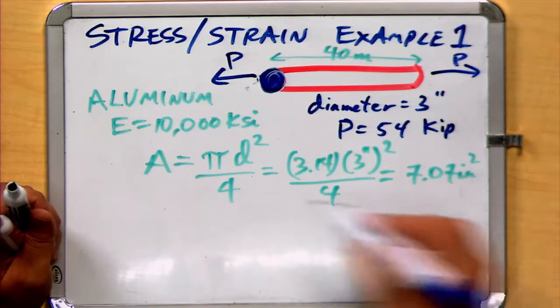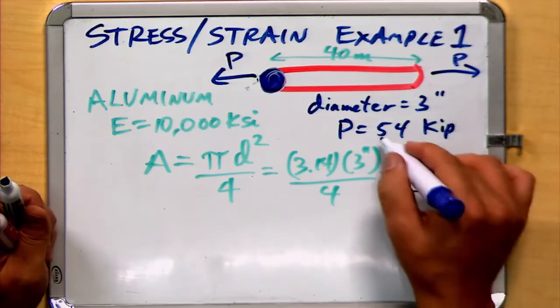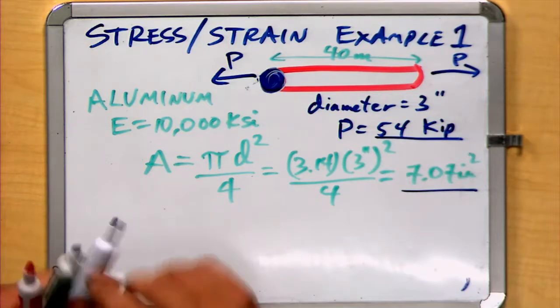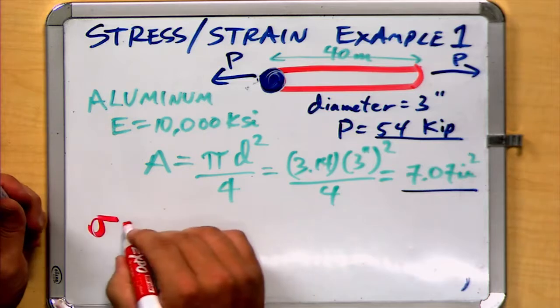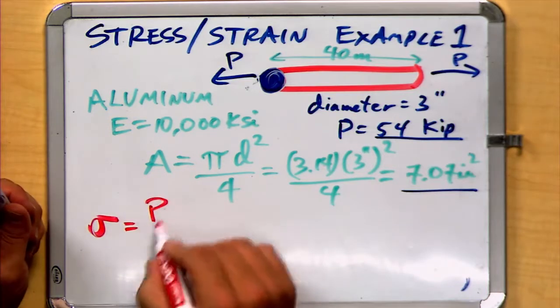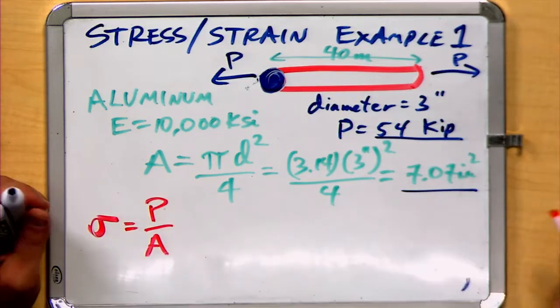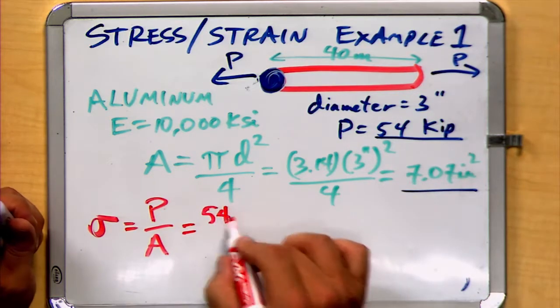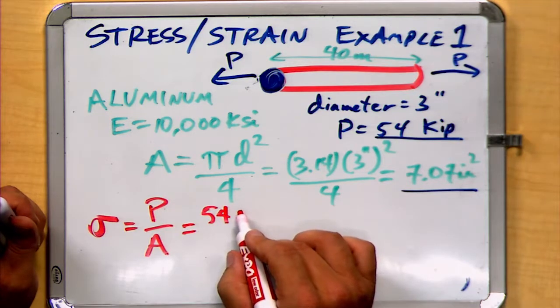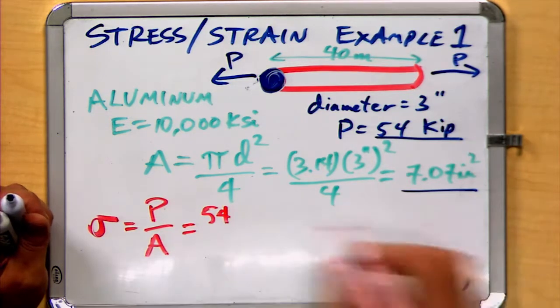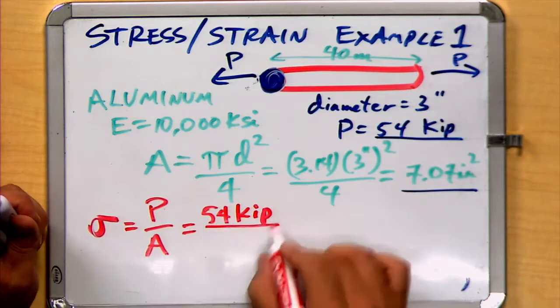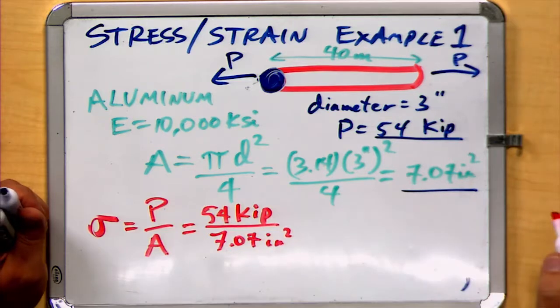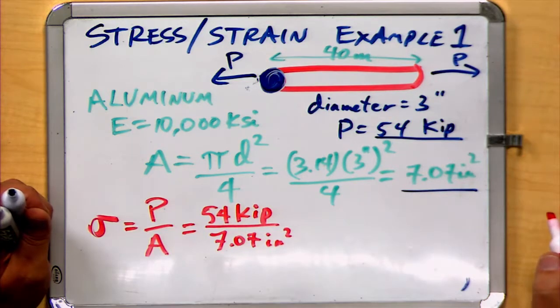Well, with that area and the initial load, we know the relationship between stress and our axial force is P over A. So we take our 54 kilopounds, and we divide it by the 7.07 square inches.